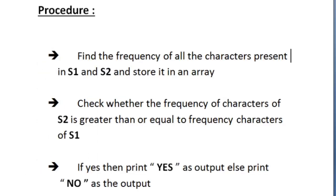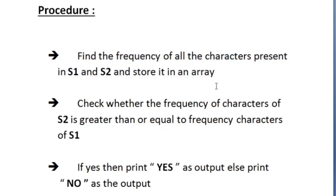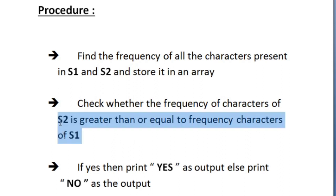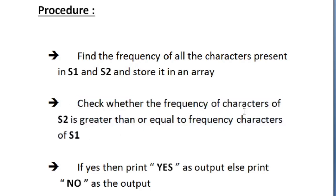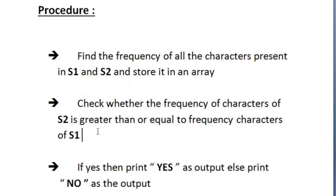Let us see the technique we are going to use in our program. First, we find the frequency count of all the characters present in s1 and s2 and store them in separate arrays. Then we check whether the frequency count of characters in s2 is greater than or equal to x times the frequency count of characters in s1. If this condition is satisfied for all characters, we print 'yes'; otherwise we print 'no'.